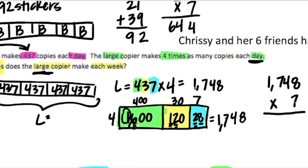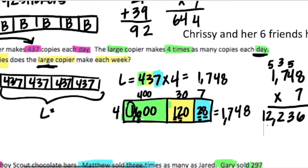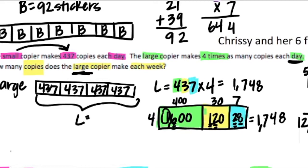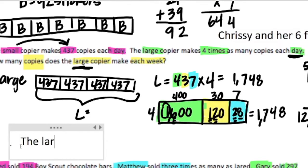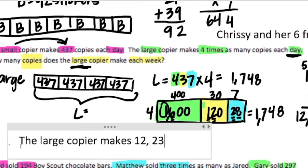8 times 7 is 56. I'm doing standard algorithm. So I'm going to write a 6 and regroup 5. 4 times 7 is 28, plus 5 is 33. So I'm going to write a 3 and regroup 3. 7 times 7 is 49, plus 3 is 52. Regroup 5, and then 1 times 7 is 7, plus 5 is 12. So let's write a statement. The large copier makes 12,236 copies each week.